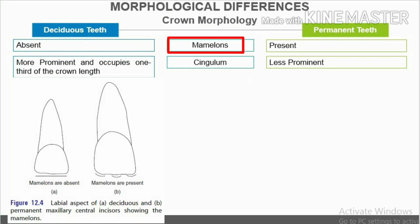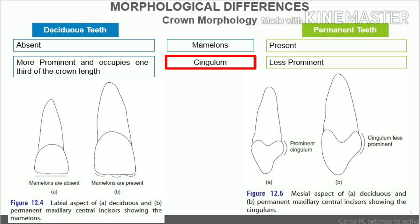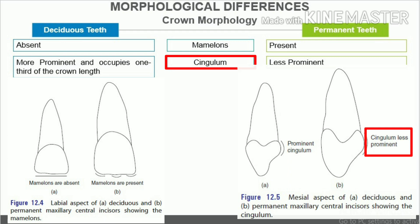Mammelons. Mammelons are absent in the incisal surface of the deciduous incisors. Permanent incisors have mammelons in their incisal surfaces. Cingulum. In deciduous teeth, on the lingual/palatal surface, the cingulum is more prominent and occupies one-third of the crown length. In permanent teeth, the cingulum is not as prominent as in the deciduous teeth.